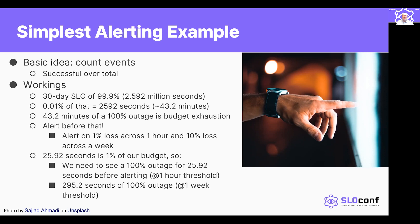Having budget exhaustion and alerting at the end of the budget exhaustion is not too useful, so you alert before that. Often you have a slow burn and a fast burn style alert — so you have an alert on 1% loss across one hour and 10% loss across a week. You can catch both the total average scenarios and also the degradation where some subsystem throws off errors every so often, not enough to amount to a complete average, but definitely something that will affect the user experience if continued. In this example, since 25.92 seconds is 1% of the overall budget, we therefore need to see 100% outage for 25.92 seconds before alerting with a one-hour threshold, or 295.2 seconds of 100% outage for the one-week threshold.